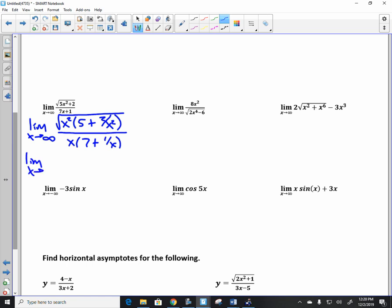Limit as x goes to infinity. Now, notice what I can do. I have the product of two things underneath the square root, correct? So you can take that perfect x squared out and make it x. So x times the root of 5 plus 2 over x squared, divided by x times 7 plus 1 over x. And notice in this situation that the x's cancel, and these go to 0. So what are you left with? Square root of 5 over 7.